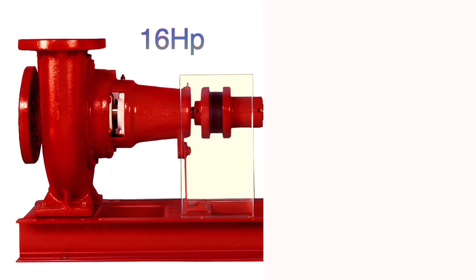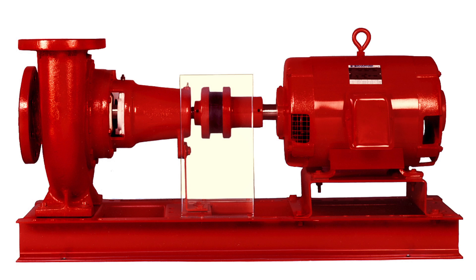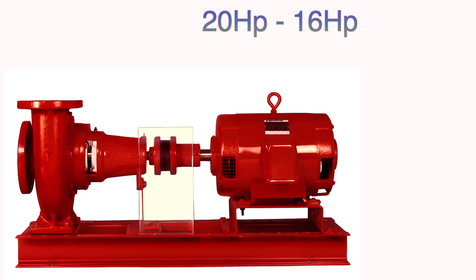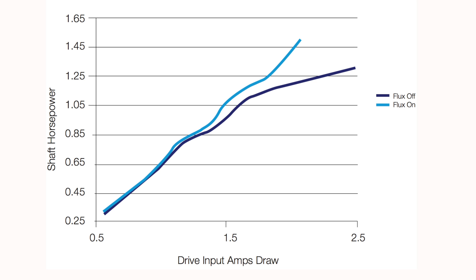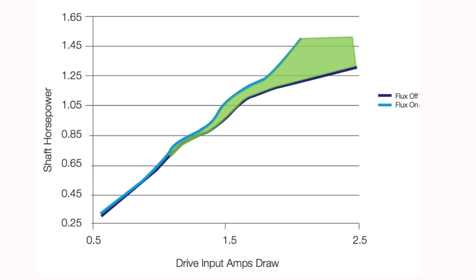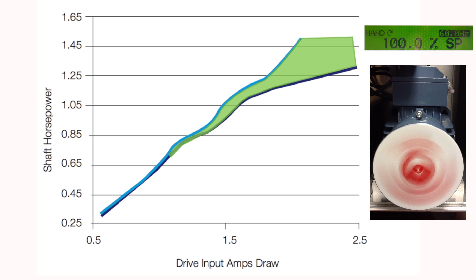Generally, you see a 20 horsepower motor put on a pump. Now assuming that your application is fully torqued and using all 16 brake horsepower, there's still 4 horsepower left that is being unutilized. Flux optimization removes that unused, wasted energy from the motor, even if that motor is running at full speed or at 60Hz.